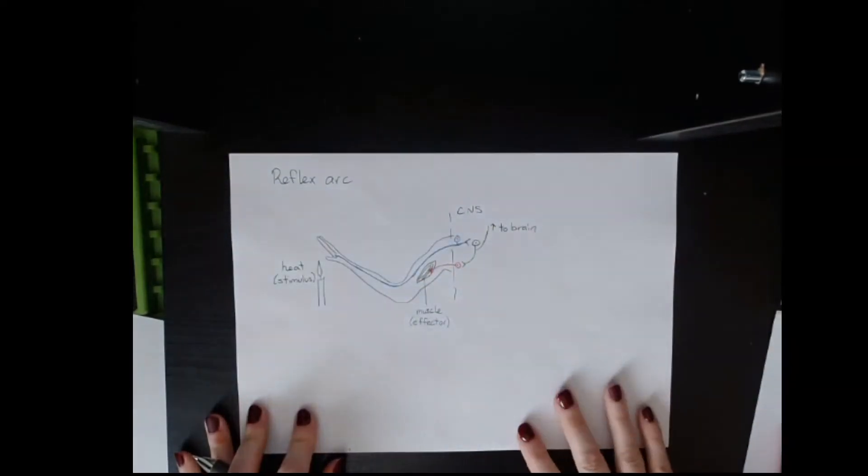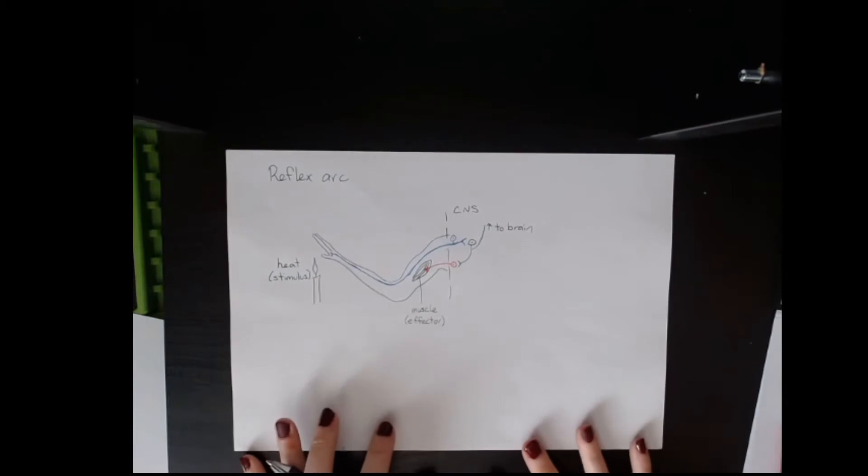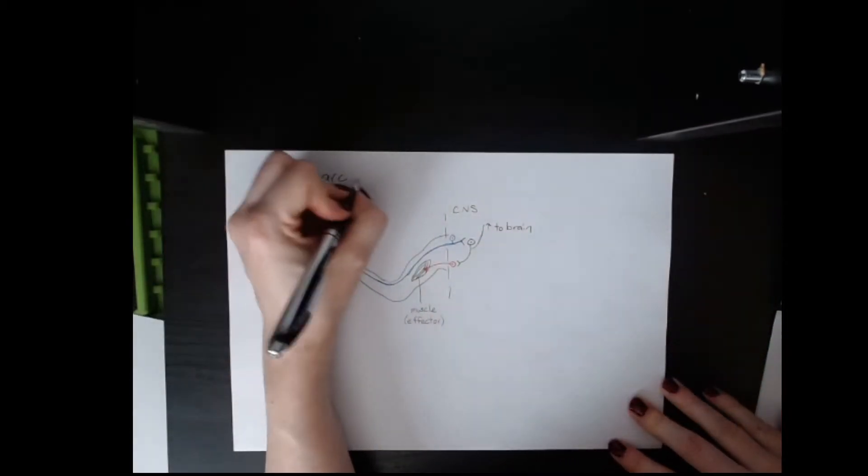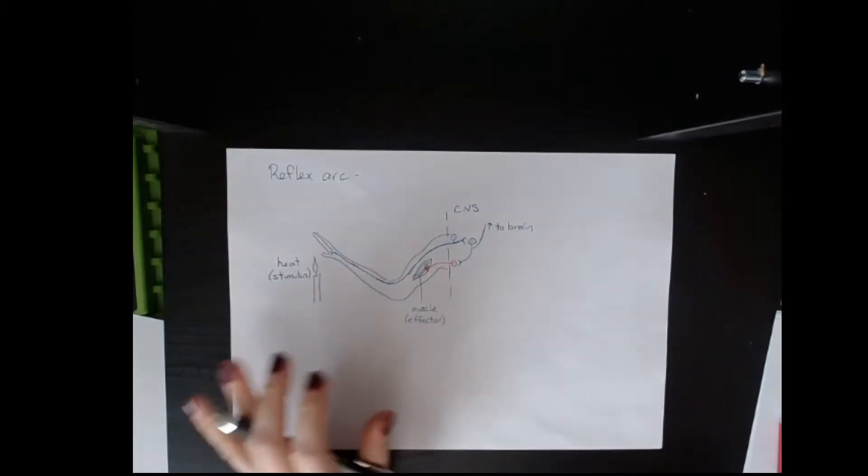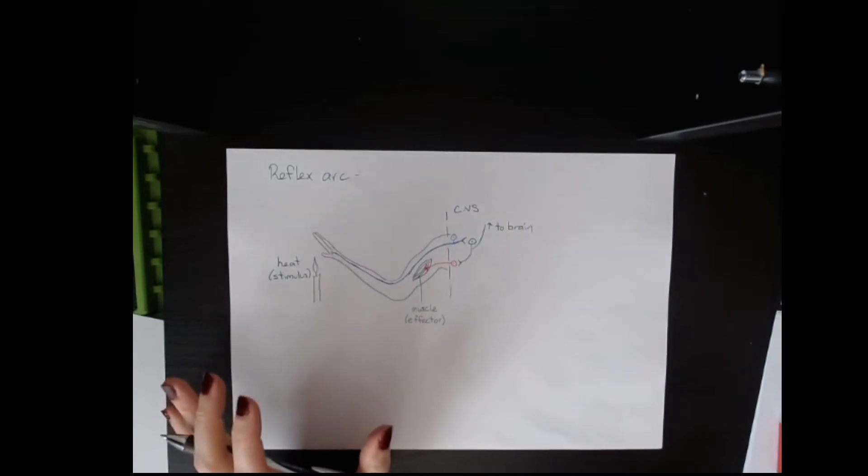The reflex arc - I apologize for my terrible drawing - is one of the simplest types of responses that our nervous system does, which is why you need to know it. Reflex arcs are simple because they don't involve any processing by the brain.